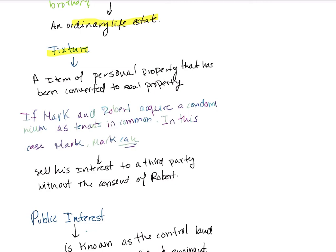If Mark and Robert acquire a property as tenants in common, Mark can sell his interest to a third party without the consent of Robert. Even though they have an estate in common with the same rights, Mark does not need Robert's authorization to sell his own portion.